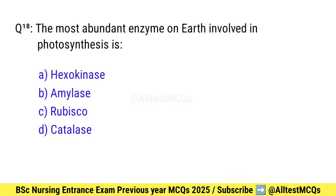Question number 18. The most abundant enzyme on earth, involved in photosynthesis, is what? Right option is C: Rubisco.